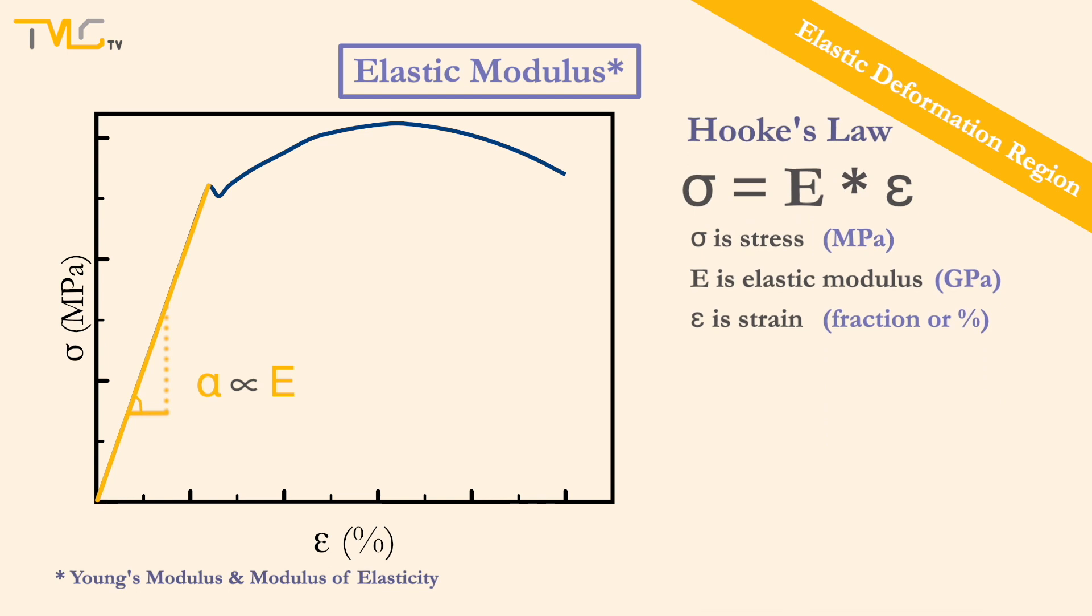Elastic modulus is used for quantifying the relationship between sigma and epsilon. Another term that is closely related to elastic modulus is stiffness, which is a measure of how much the material can resist elastic deformation under loading. A material having greater elastic modulus will have higher resistance to elastic deformation. As a result, it will have higher stiffness compared to a material with a lower elastic modulus.